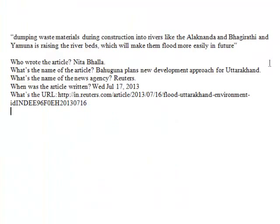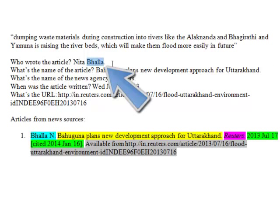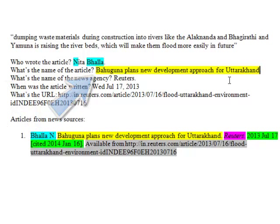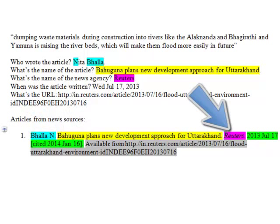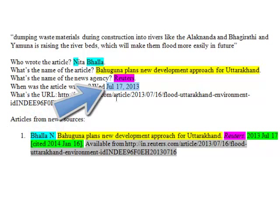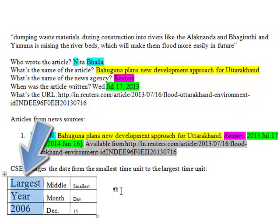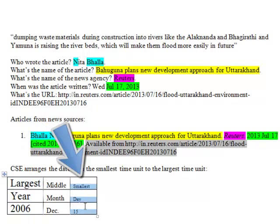So, how do we transfer this information into CSE format? First, we take the author's family name and pair that with her first initial, and place those at the beginning of the reference. Then we take the name of the article as our second item, the news agency as our third item, and the date as our fourth item. However, we'll want to list the date CSE style. CSE starts with the largest time unit first and ends with the smallest: the largest is the year, the smallest is the day, and in between goes the month.